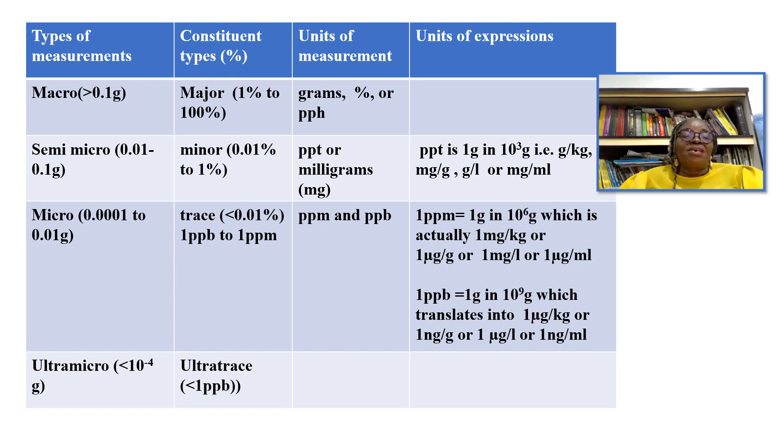We have the constituent types which can be represented in percentage. The major constituents where we are looking for 1% to 100%. The minor constituents when we are looking for materials of 0.01% to 1%. The trace constituents is less than 0.01%, which is 1 parts per billion to 1 parts per million.